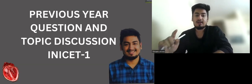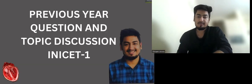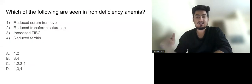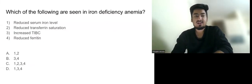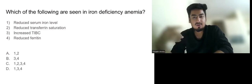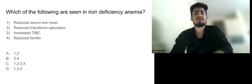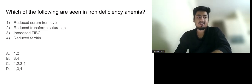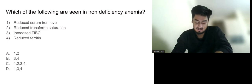We will discuss three questions per session until your INESET exam, covering at least three years of papers. We will start with the medicine part. The first question asks: which of the following are seen in iron deficiency anemia? The options are listed as one, two, three, four — with option A being one and two, and option B being three and four. This type of question allows you to rule out options more easily. The findings listed are: reduced serum iron level, and reduced transferrin saturation.